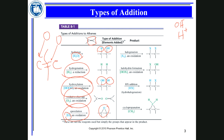What makes a major product? Two answers relate to stability: a more stable intermediate can yield the major product, and a more stable product can also yield the major product. You can sometimes change the conditions of the reaction to favor the more stable product.